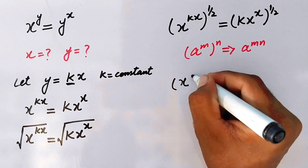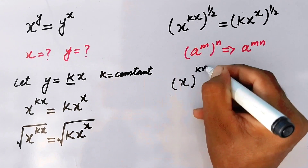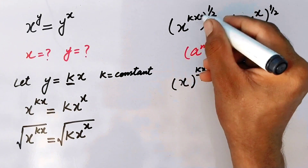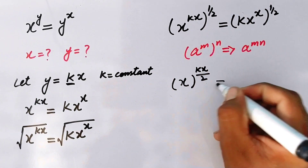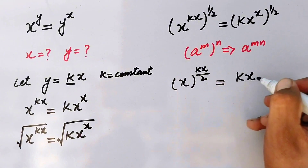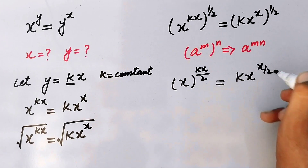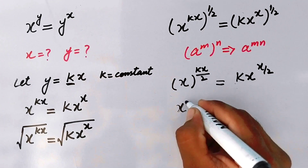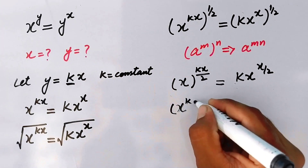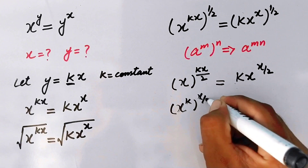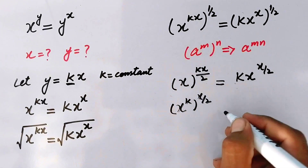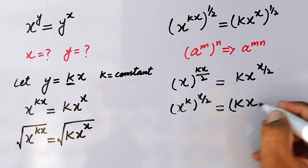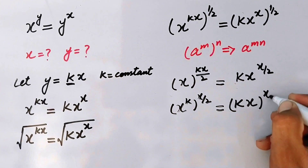We can now write the above values as x raised to power kx over 2, equal to kx raised to power x over 2. So x raised to power kx over 2 is equal to kx raised to power x over 2.